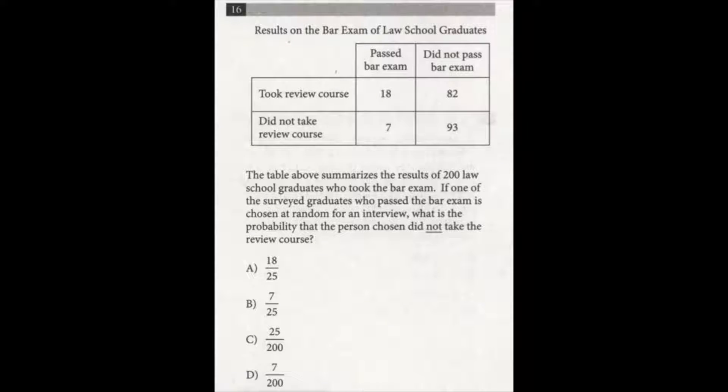The table above summarizes the results of 200 law school graduates who took the bar exam. If one of the surveyed graduates who passed the bar exam is chosen at random for an interview, what is the probability that the person chosen did not take the review course?